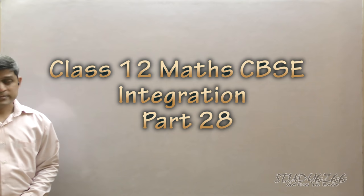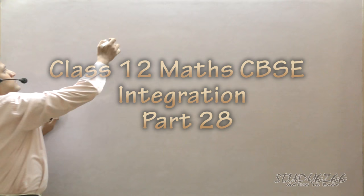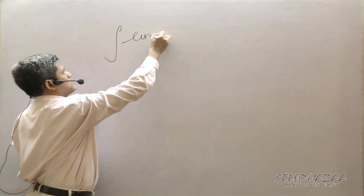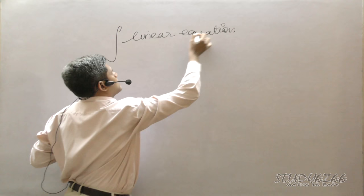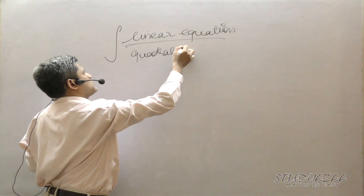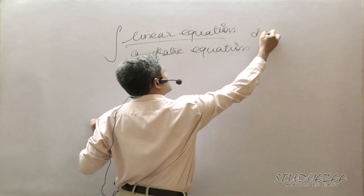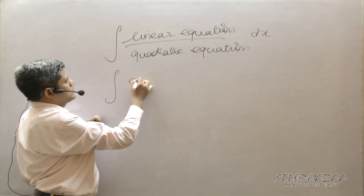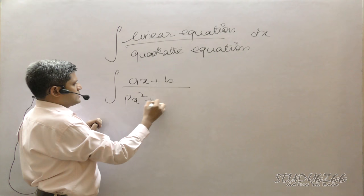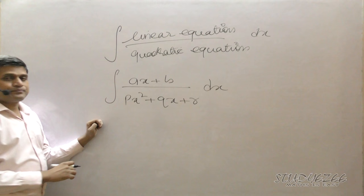Next, let's see the format in integration. First, I will show a general form. It is integration of linear equation upon quadratic equation — that is, (ax + b) / (px² + qx + r) dx. Okay, this is the general form.